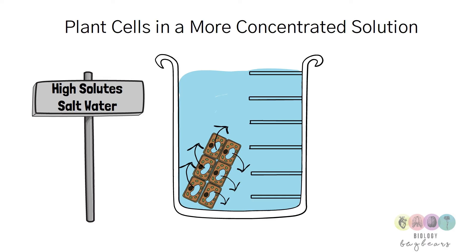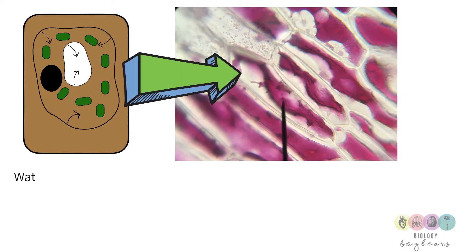And when water leaves the cell, the cytoplasm loses water and the vacuole shrinks because it loses water. So water has moved out of the cell towards that more concentrated solution and this means that the cytoplasm and the vacuole have lost water.